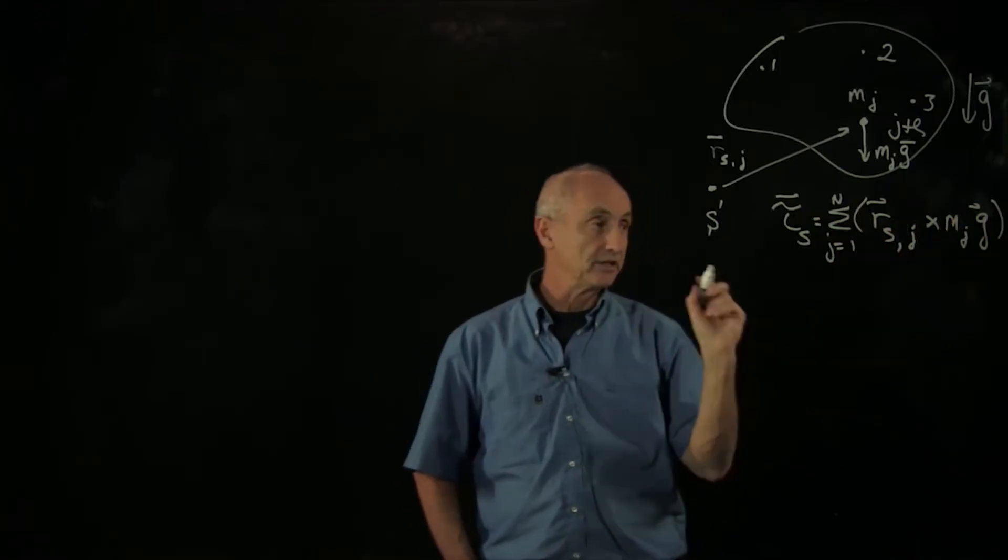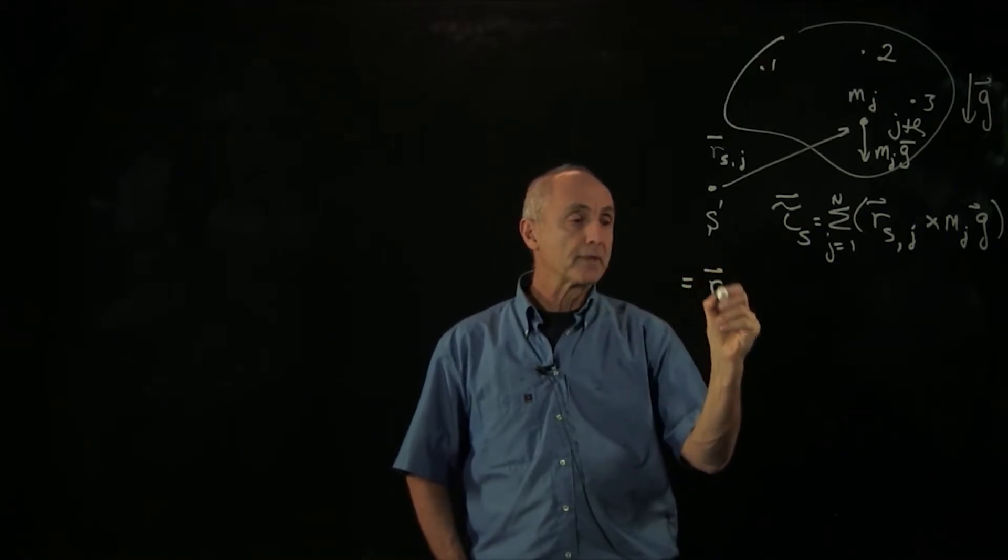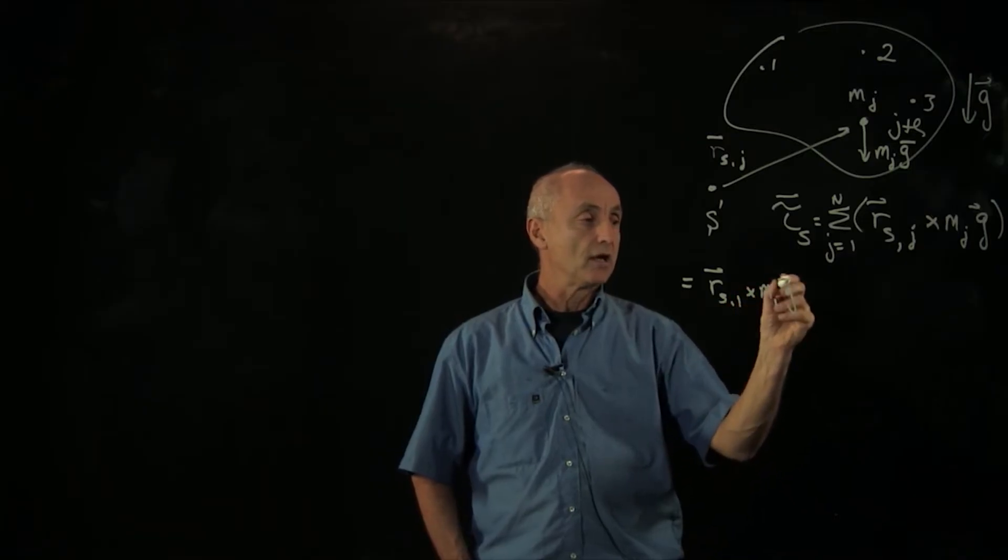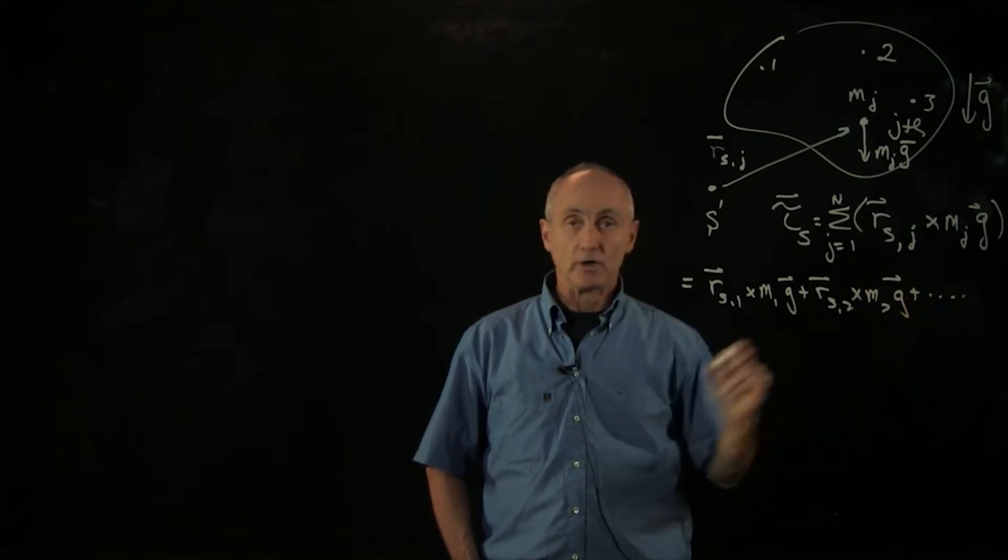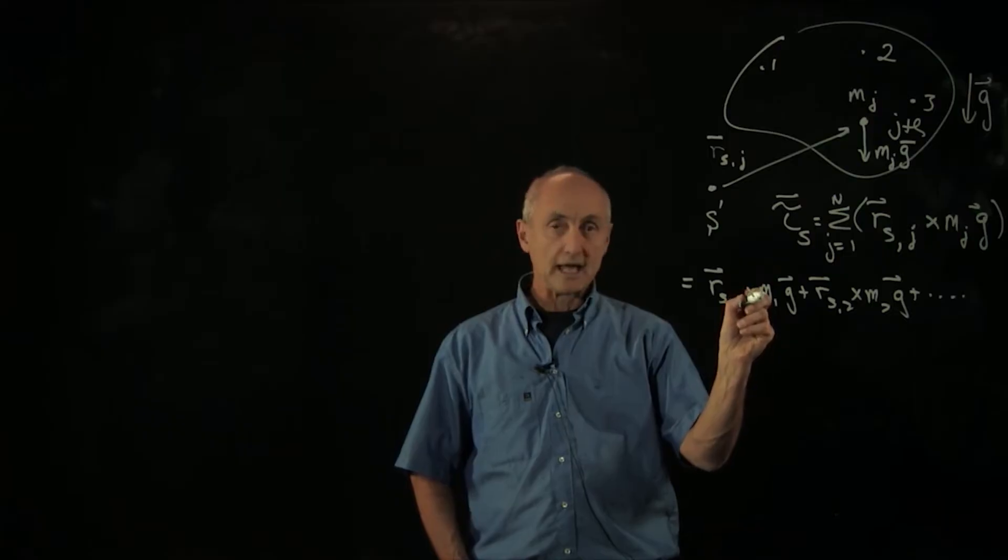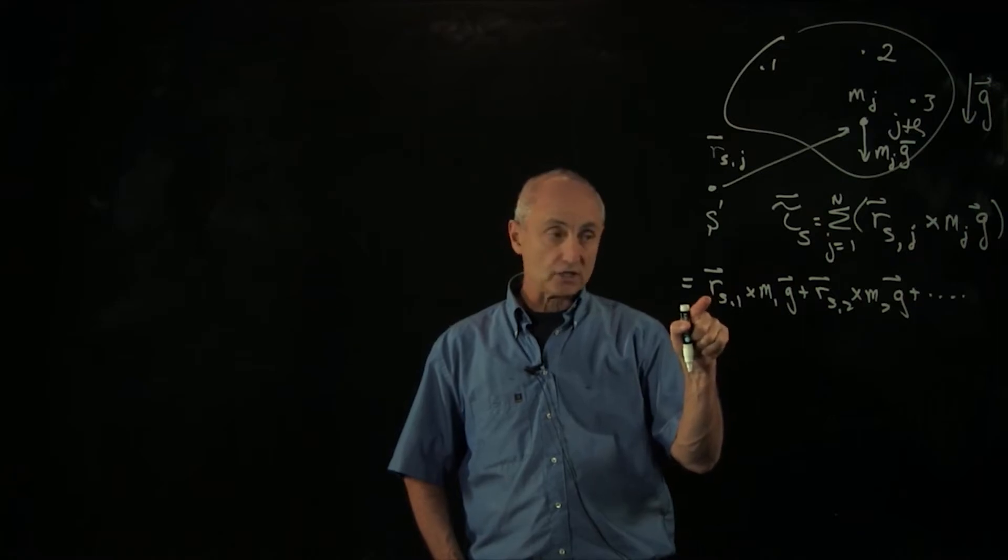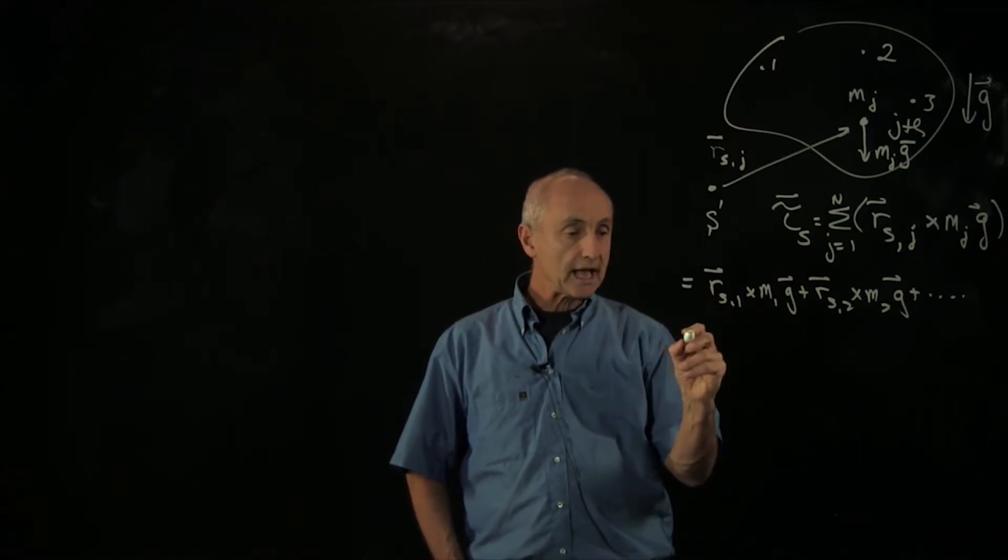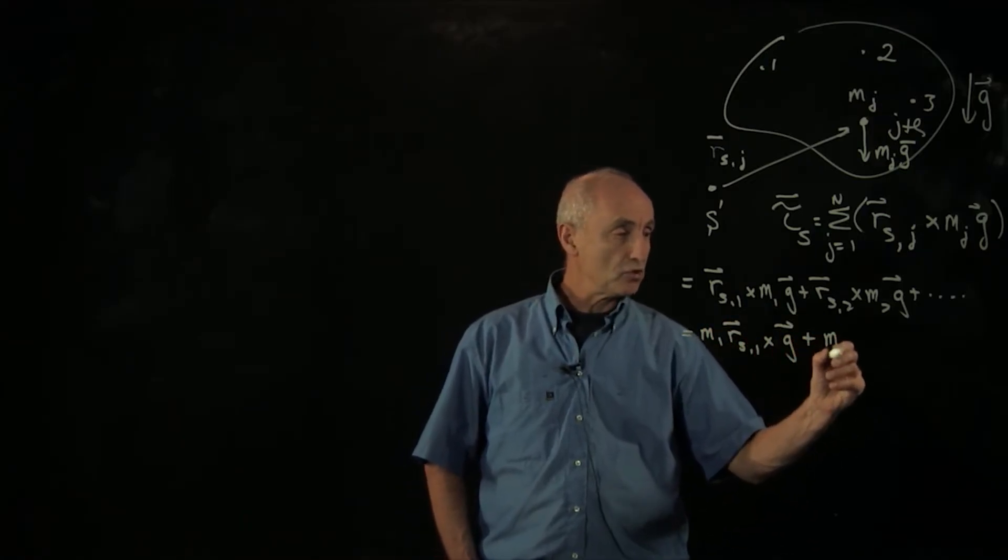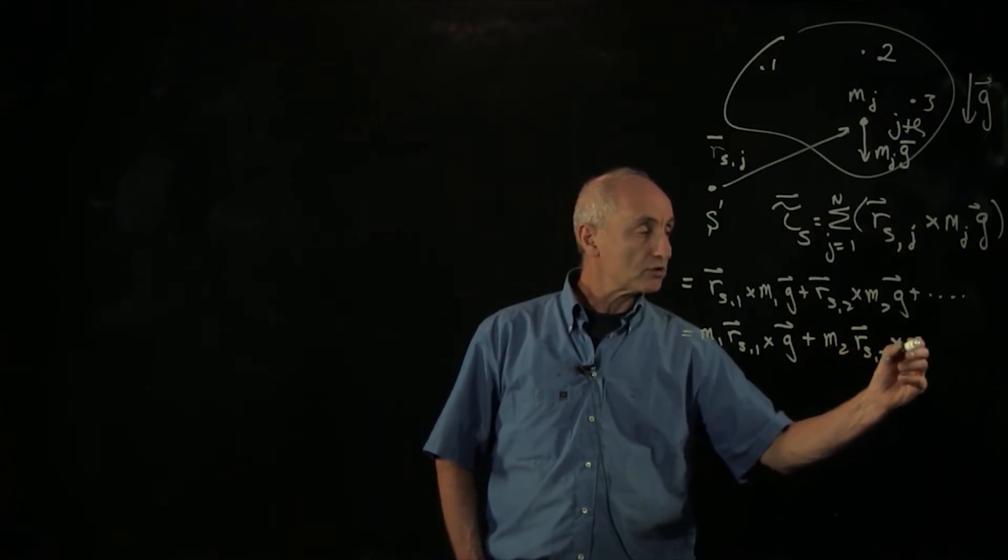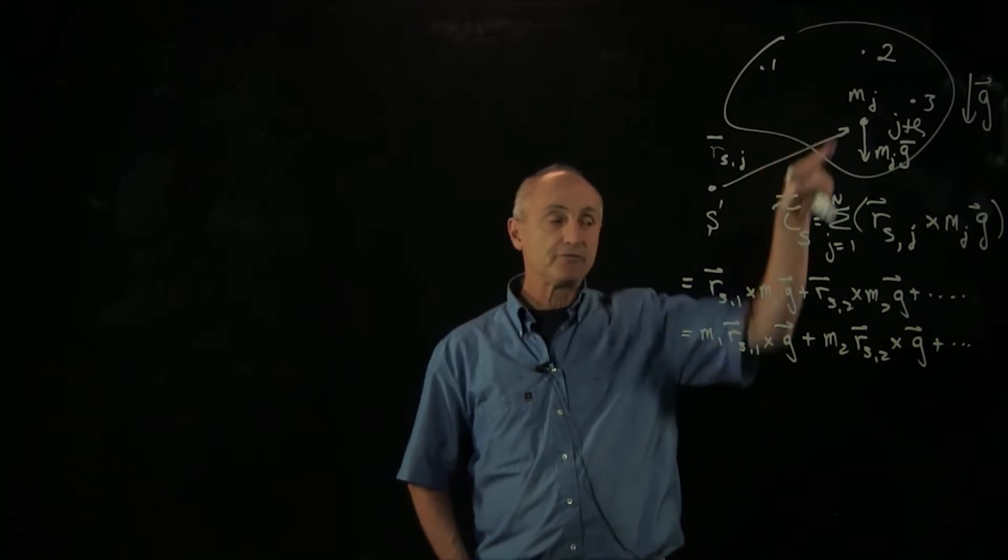But the sum will simplify in the following way. Let's write out a couple terms to see what it actually looks like. So we have rs1 cross m1g plus rs2 cross m2g, and we just keep going for the n terms. Now the quantity m1 is a scalar, units of kilograms in SI units. But the cross product is between this vector and that vector. So I can actually rewrite this as m1 rs1 cross g plus m2 rs2 cross g, et cetera. And you see that the g term is the same for every single object.